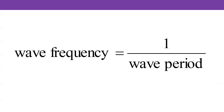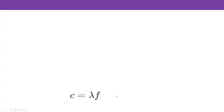So the connection between those two parameters of a wave is that the wave frequency is equal to one over the period. So the words looked a little bit opposite, and also the equation kind of bears that out. The longer it takes for an object to wiggle back and forth in time, the lower the frequency. So if you want a high frequency, you have to have a short period.